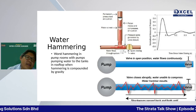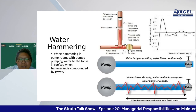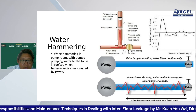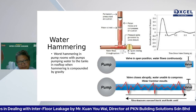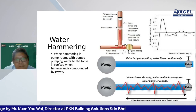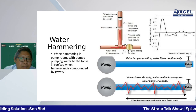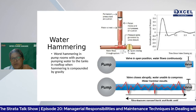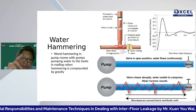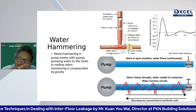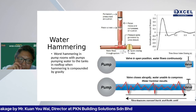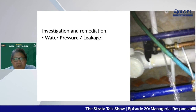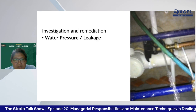Water hammering sound, especially in the pump room, occurs when the pump stops and water pushes back due to gravity, banging the pipes. This hammering can be as heavy as 600 pounds of force on the pipe, eventually causing a burst. A water hammer arrestor — containing a piston and air layer — absorbs the pressure surge when triggered.